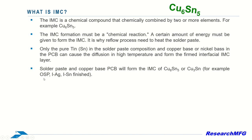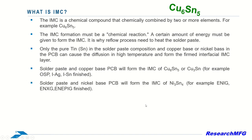For instance, solder paste and copper-based PCB create the IMC of Cu6SN5 or Cu3SN, as seen in OSP, IAG, and ISN finishes. Solder paste and nickel-based PCB create the IMC of Ni3SN4, as seen in ENIG, ENXG, and ENAPIG finishes.